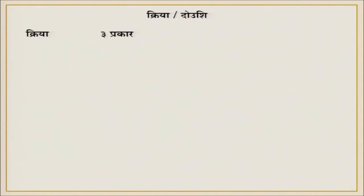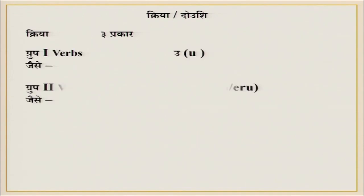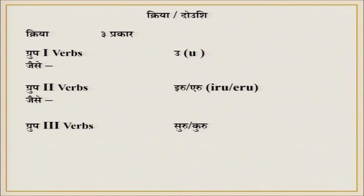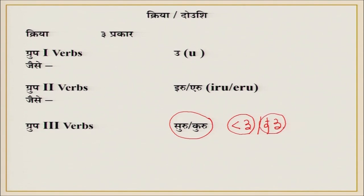Now, in Japanese, verbs are divided into three groups. Group 3 is the easiest to start with — it has only two verbs: 'kuru' and 'suru,' meaning 'to come' and 'to do.' They are in Group 3 because they don't follow any regular pattern — they are irregular verbs that don't fit into any other group.